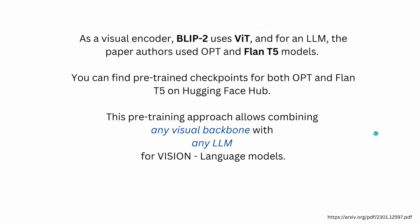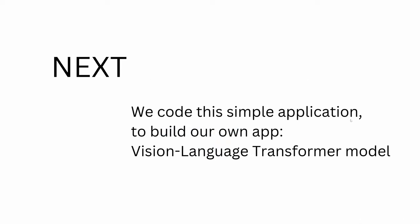The absolute beauty of BLIP-2, published January 30, 2023, is that while it used a vision transformer and Flan-T5, you are not restricted to this. Since both the vision model and language model are frozen, you can combine almost any visual backbone with any large language model, training only the Q-Former to produce a complete pre-trained vision-language model out of the pipeline.